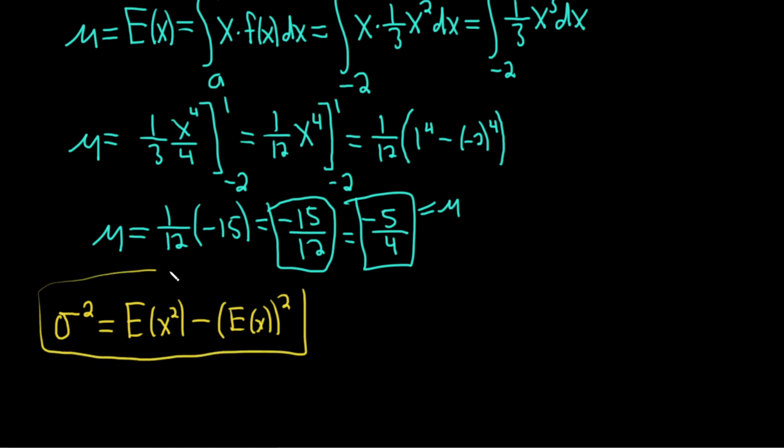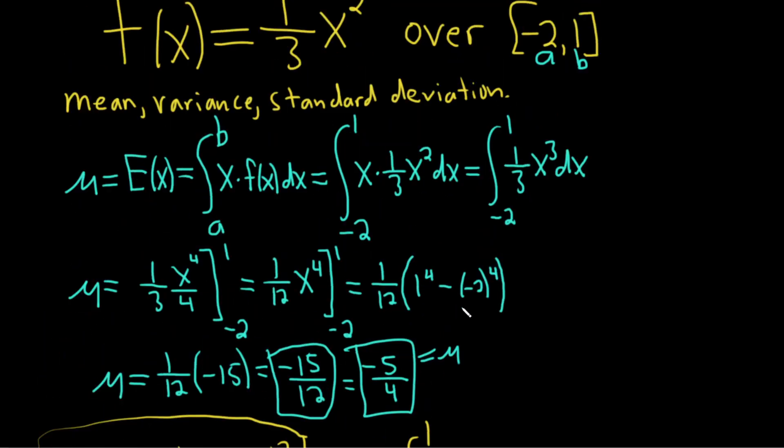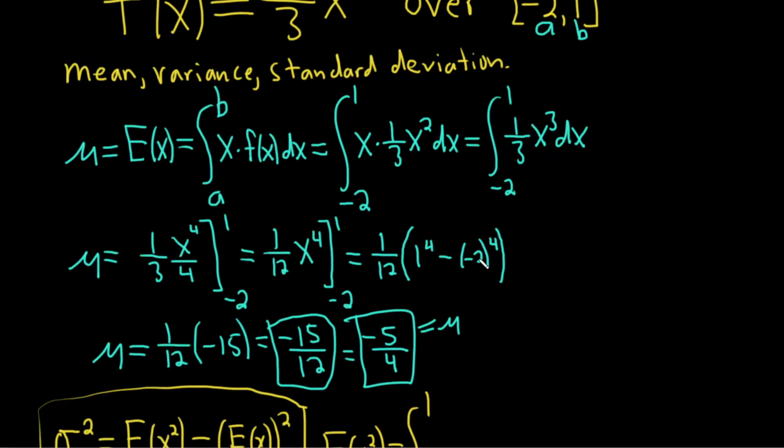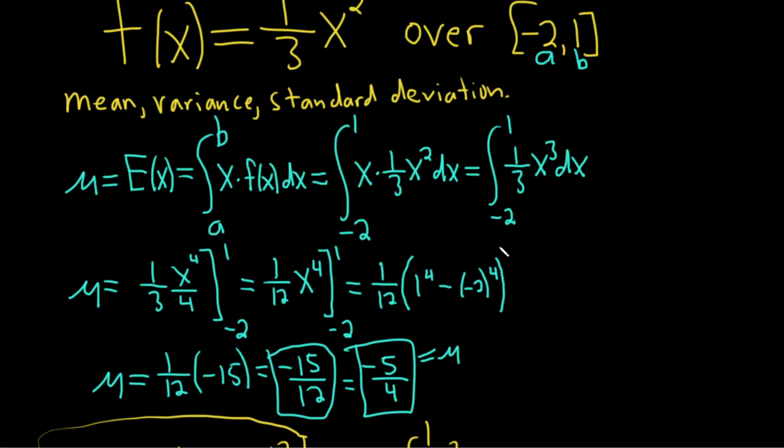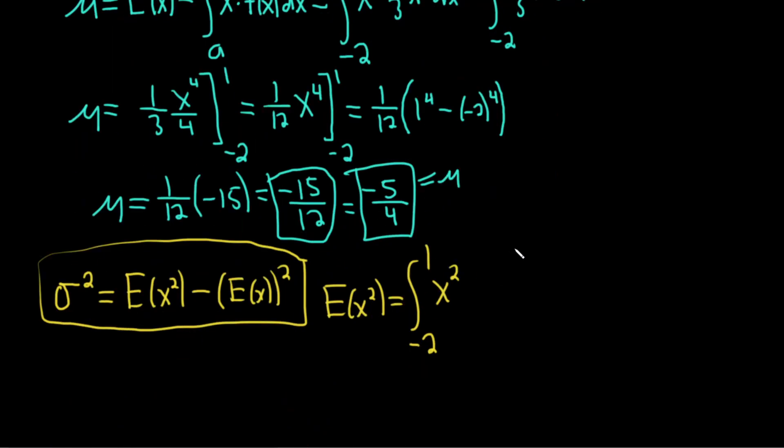The expected value of x squared is the definite integral from a to b, from negative 2 to 1, of x squared times our density function, which is one-third x squared dx.